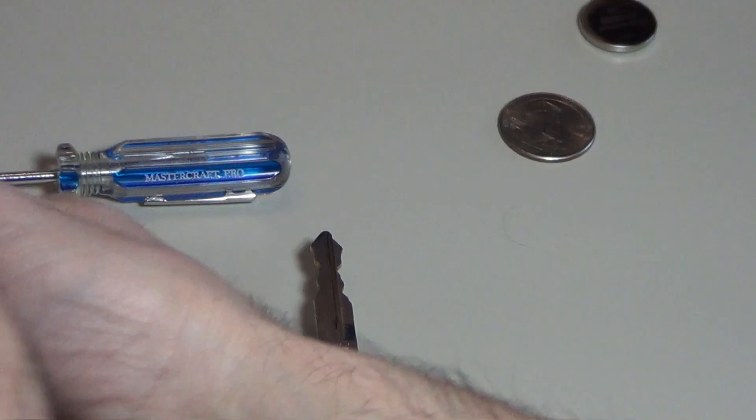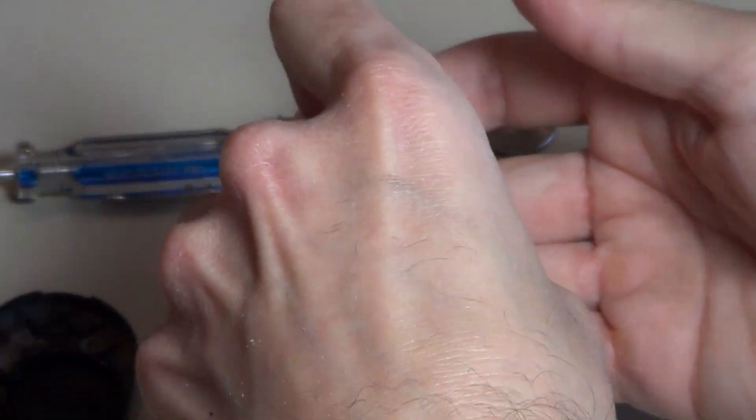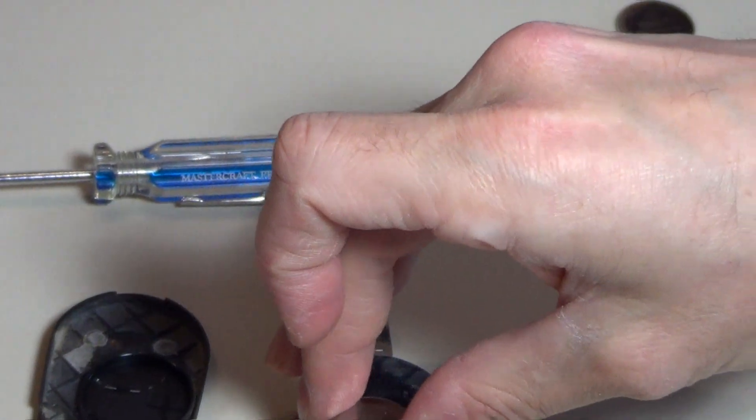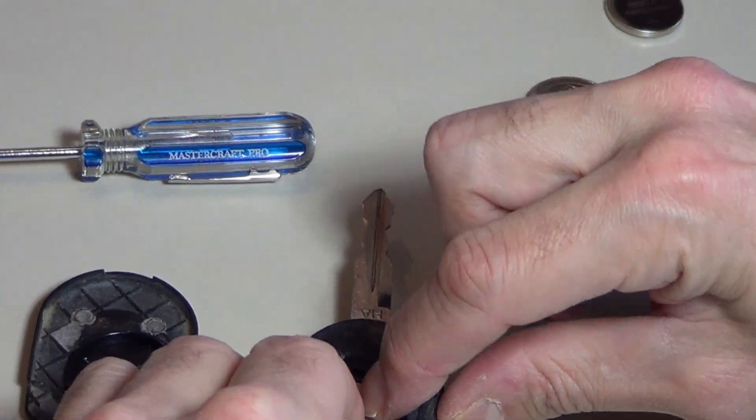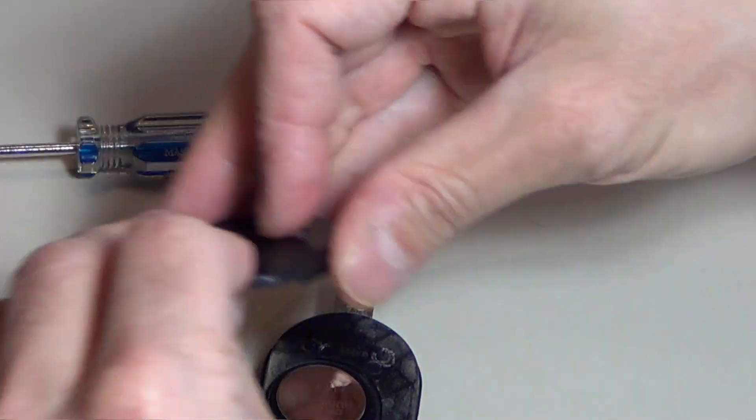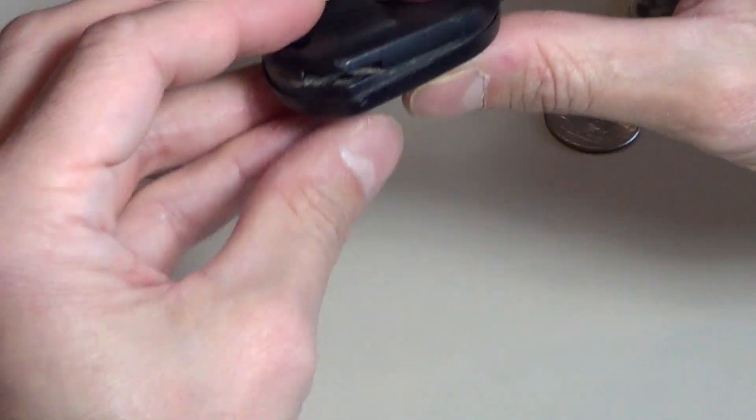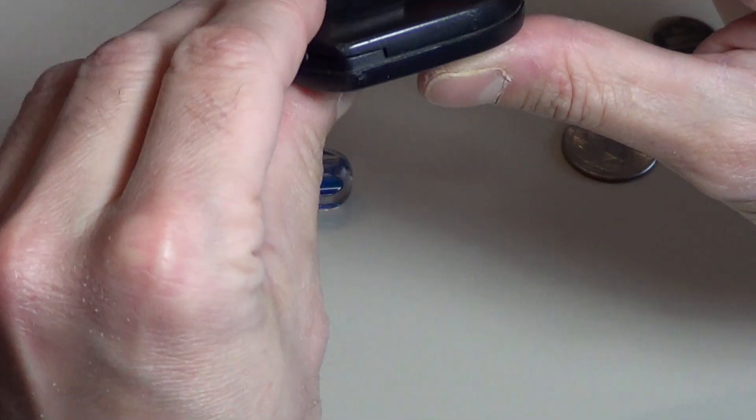Then we're going to grab the new battery. We're going to just drop that in there just like that. You want to press on it. And then the access cover just goes back on it. Hopefully, you can sort of see that.